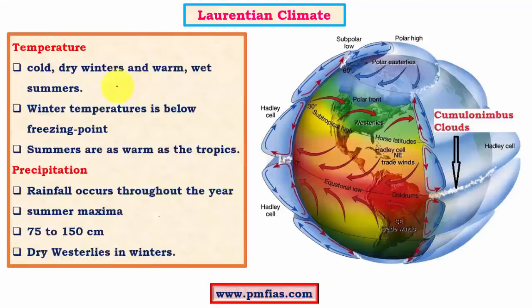In terms of temperature, the annual temperature range is quite significant because of cold winters and hot summers. In summers, temperature can be as high as 20 to 25 degrees Celsius, whereas in winters it can go below freezing. As a result, the annual range is quite significant. In winters, the landforms can be affected by frost, snowfall is quite common, and summers are very warm, as in the tropics.